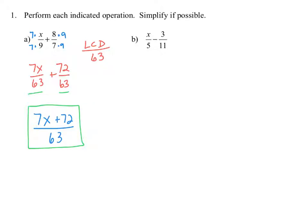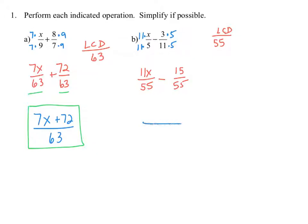In example B we have x over 5 minus 3 over 11. To subtract these rational expressions we need to get a common denominator. The least common denominator of 5 and 11 is 55. So we want to make both equivalent fractions with a denominator of 55. For x over 5, we multiply the numerator and denominator by 11 to get 11x over 55. For 3 over 11, we multiply by 5 to get the equivalent fraction 15 over 55. Since we have a common denominator, we combine the numerators to get 11x minus 15 over 55.